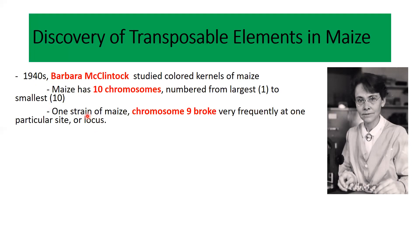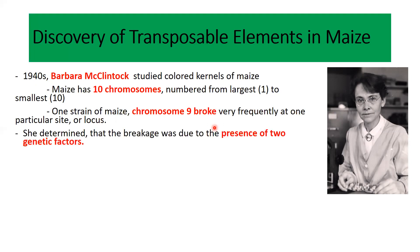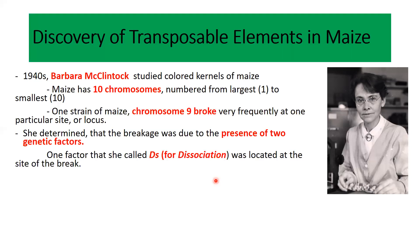She found that in one strain of maize, chromosome number 9 was breaking very frequently at a particular point. When she observed this chromosome under a microscope, she could see one of the arms of the chromosome was broken. She found that there was a particular sequence or element associated with this site of breakage — when this element was present, that chromosome had a probability of breakage.